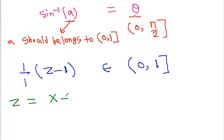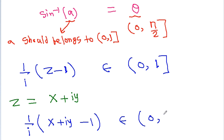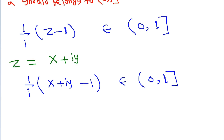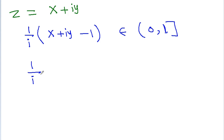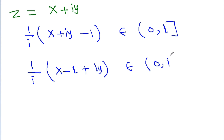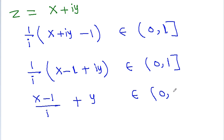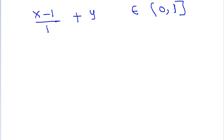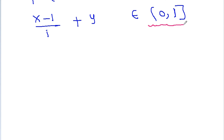If we take g = x - iy, then 1 / (iz × (g-1)) should belong to (0, 1]. This becomes 1 / (i × ((x-1) + iy)), which simplifies to (x-1)/(i) + y/i × (1/i) — giving us (x-1)/i + y. Since the right-hand side is real, and y is also real, then y should belong to (0, 1].